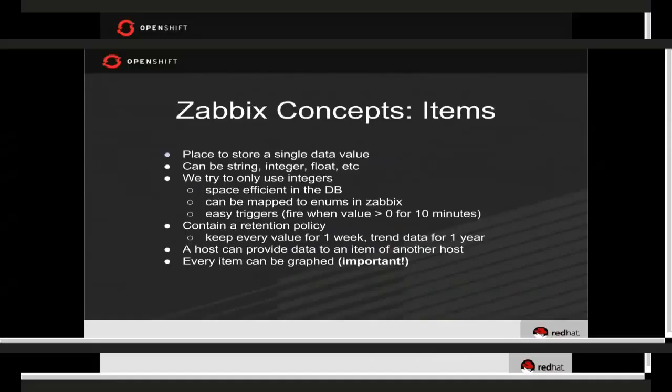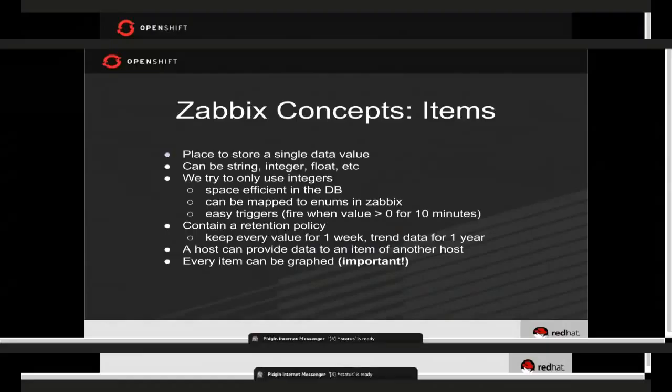Items contain a retention policy. Our defaults keep every single value reported for one week — so if you report every five minutes, it keeps all of those for an entire week. After that week it just keeps trending data, so you can see roughly what the value was over an hour. We keep that trending data for one year, then it falls off. All of these are tunable and changeable.